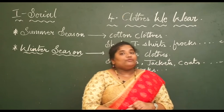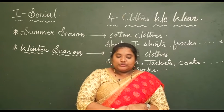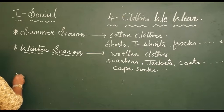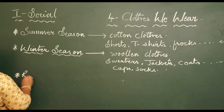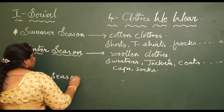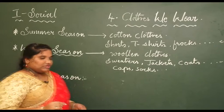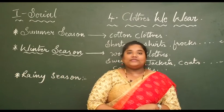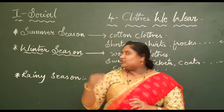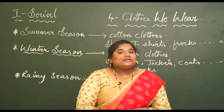So where do we get wool from? We get wool from sheep. Then during the rainy season — you children like this season a lot. Why do you like rainy season? Because you can play in water, go out and happily enjoy the rain. So most children love the rainy season. What do we wear in rainy season?